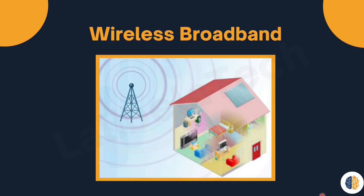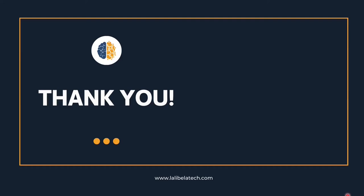The subscriber's access unit is connected to the wired network inside the home. From the perspective of the home user, the setup is not much different from digital subscriber line or cable service. The main difference is that the connection from the home to the internet service provider is wireless instead of a physical cable. In many areas, home wireless broadband is competing directly with digital subscriber lines and cable services. If you have any questions, please use the comment section below. In the next lecture we will discuss network security. Thank you and see you there.